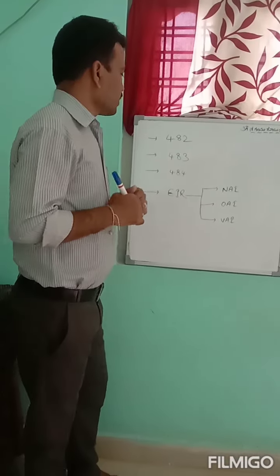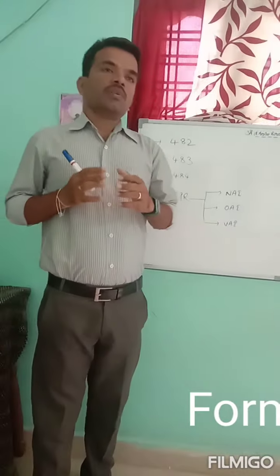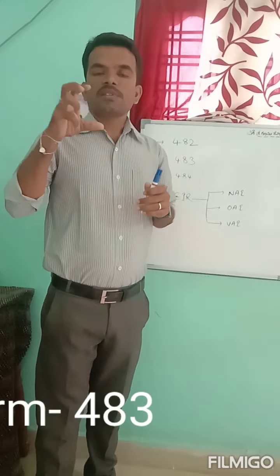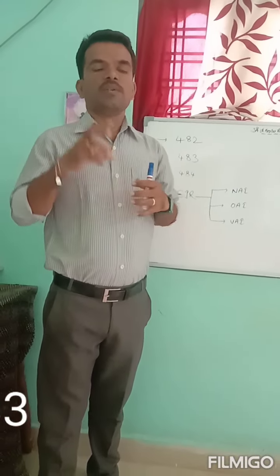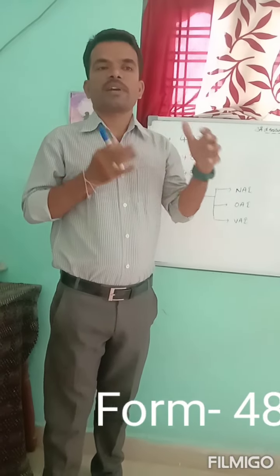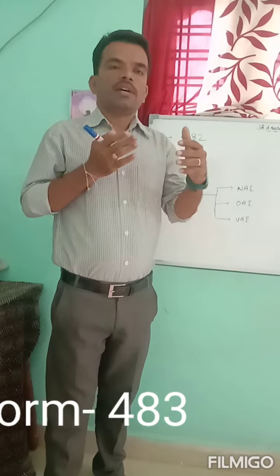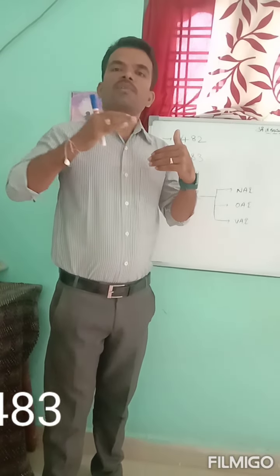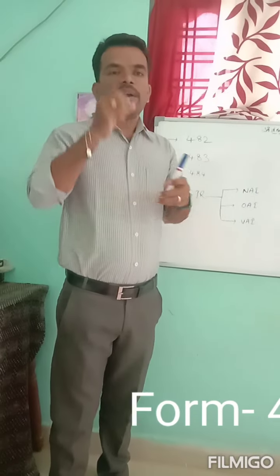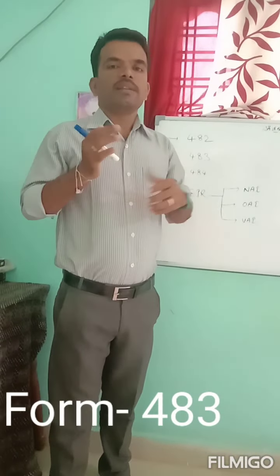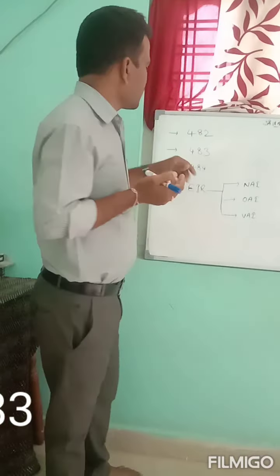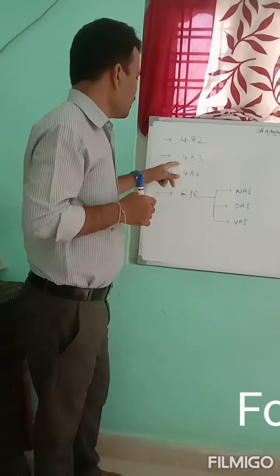Form 483 is issued when they are doing the inspection at a certain manufacturing site and they find some observations or abnormalities — where the executed procedure does not satisfy the written procedure. In that case, they will write down some observations in their notes, and that is called Form 483.